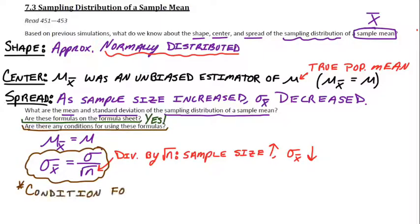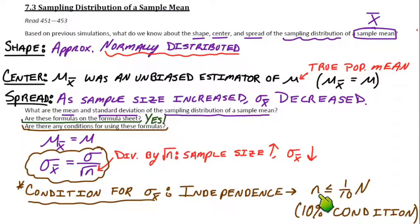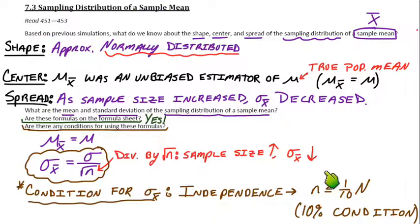We do have a condition for the standard deviation, and you should recognize it has to do with independence. Because most of the time when we do research we don't sample with replacement, as long as our sample size is less than or equal to a tenth of the population, we are okay to trust this independence condition. We call that the 10% condition. That is the same condition as we saw for sample proportions. We can trust independence as long as we're not sampling more than 10% of the population, and as long as that's verified, the standard deviation formula holds.